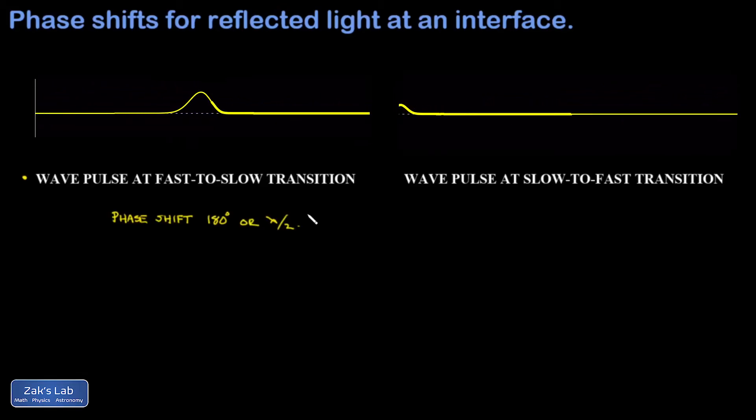The second type of reflection is the slow-to-fast reflection, where light is passing from a medium in which the speed is lower, in other words the index of refraction is higher, to a medium in which the speed is higher, or the index of refraction is lower. Again we understand the reflection of light by making an analogy to waves on a string.